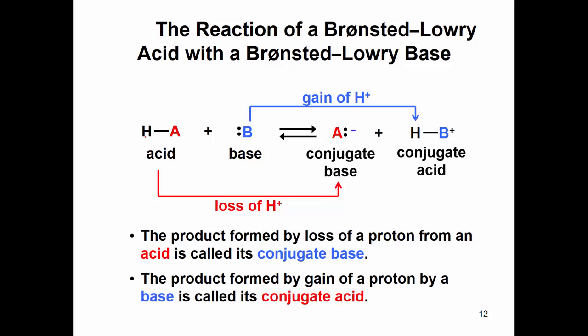We give names to this. HA is our acid and the other is our base. If you look on the other side of the equation, an acid has a pair and its pair is called a conjugate base — we call this the acid-conjugate base pair. An acid, when it loses a hydrogen, becomes a conjugate base on the right side. A base, when it gains a hydrogen, becomes the conjugate acid. So the product formed by loss of a proton is called the conjugate base, and the product formed by gain of a proton is called the conjugate acid.